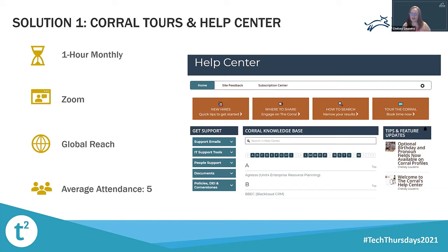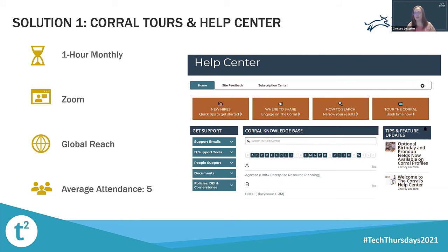During the tour I also highlight the Help Center — a space within our community that contains a knowledge base of the Corral features and how the site integrates with other systems. Staff can find support contacts here, such as IT and our people department, as well as quick tips. I put out a blog every now and then with quick tips and new features available in the Corral. There's also a feedback forum where employees can share their thoughts and insights so we can take those recommendations and better our site. We also have a subscription center where people can quickly adjust the email notifications they're getting — choosing the news they want at the frequency of their choice.